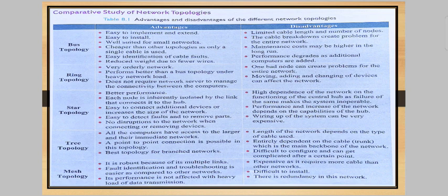Next is the advantages and disadvantages of different types of topology. First is bus topology. Bus topology is easy to implement, extend, and install. It is well suited for small networks and cheaper than other topologies as only a single cable is used. Disadvantages: there is a limited cable length and number of nodes. If the cable breaks down, it creates a problem for the entire network. Maintenance costs may be higher in the long run, and performance decreases as additional computers are added.